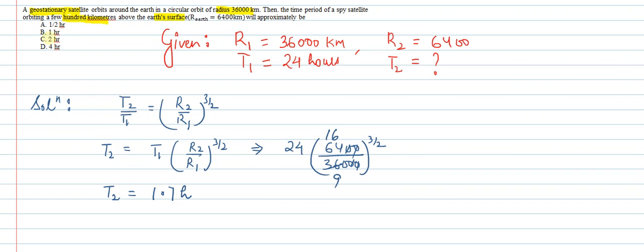Now if you check the options, we have one half hour, one hour, two hours, and four hours. None of the options match with 1.7 hours. So we can say since the radius of this satellite will be somewhat more than the radius of the earth because of the surface, the time period of the spy satellite equals approximately 2 hours. So this is our answer, which is option C.